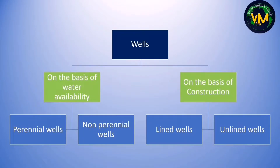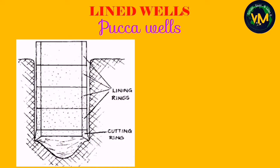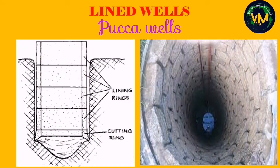Well irrigation can be classified on the basis of water availability into perennial wells and non-perennial wells, and on the basis of construction we have lined wells and unlined wells. Lined wells are pakka wells — the walls of these wells are supported with bricks or stone in a circular pattern.